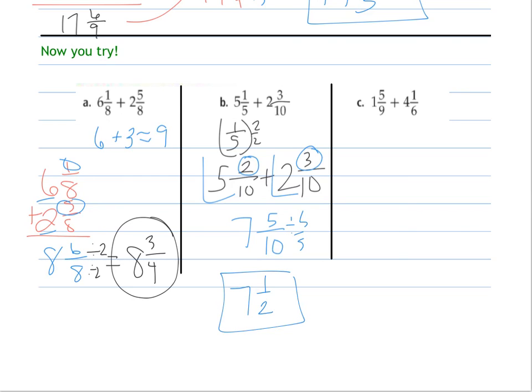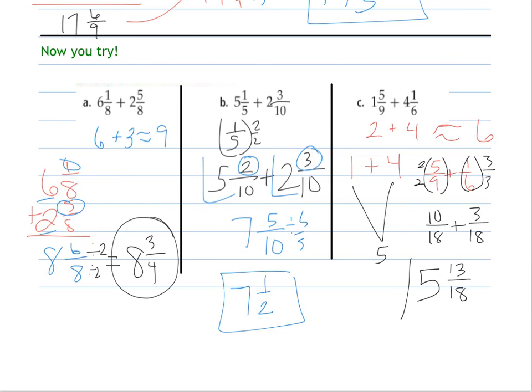Over here, estimating, this is approximately 1 and 1 half or we could round up to 2, and this is approximately 4, so we should be close, approximately 6. We need a common denominator, 9 and 6. Looking at my fractions, I have 5 ninths and 1 sixths. Least common denominator, maybe I don't know that exactly. I could multiply them together, or I know for sure they both go into 18. So I'm going to change that one by 2 and this one by 3. This becomes 10 eighteenths plus 3 eighteenths for a total of 13 eighteenths. This doesn't make sense because it's less than 1, but that means we have not forgotten about our whole numbers. 1 and 4 together is 5. So put that with our fraction for our mixed number.